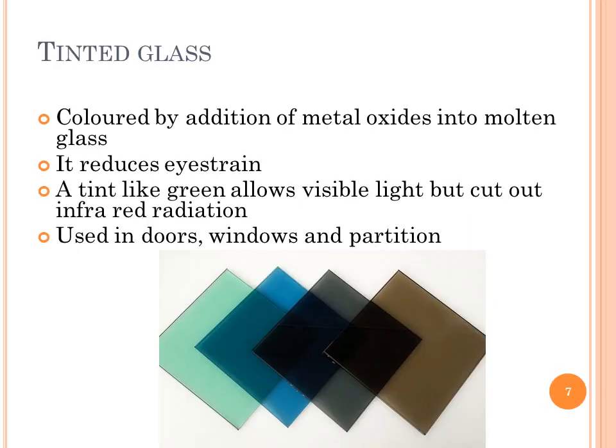Next is tinted glass. They are colored by the addition of metal oxides into molten glass. It reduces eye strain. Tinted glass, like green tinted glass, allows visible light but cuts out infrared radiation. It is used in doors, windows, and partitions.